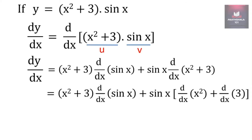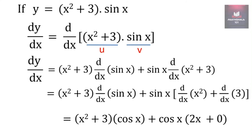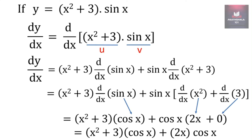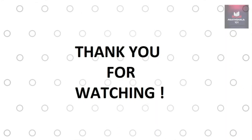The derivative of sin x is cos x, the derivative of x square is 2x, and the derivative of 3 is 0. So the answer becomes x square plus 3 into cos x, plus sin x into 2x plus 0. On simplification this becomes x square plus 3 into cos x plus 2x into cos x. Hope you understood the concept. Thank you for watching this video.